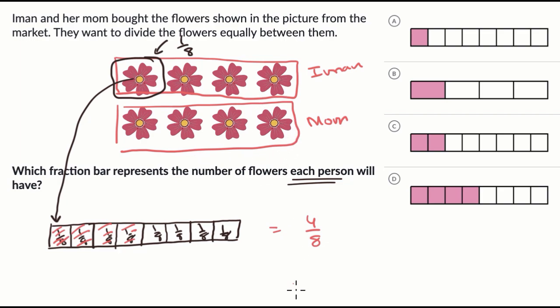But which of those fraction bars represents that? Well, we see that right over here. Choice D. They split it into eighths. Each eighth represents a flower, and Iman gets half of them, and they shaded in half of them right over there. So we like this choice.